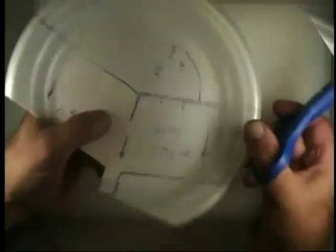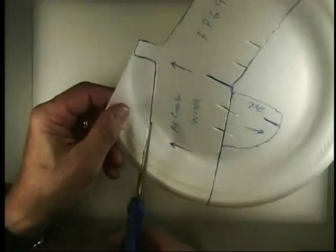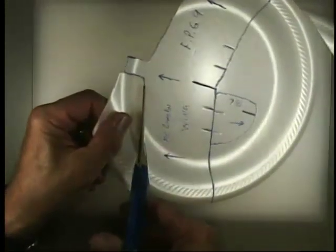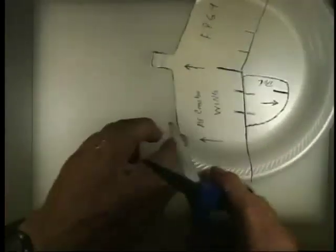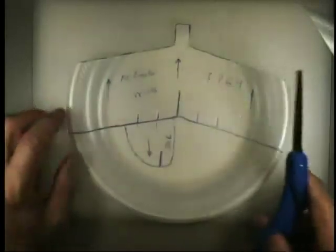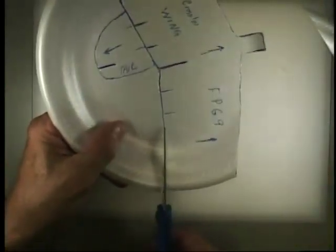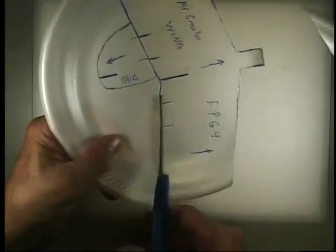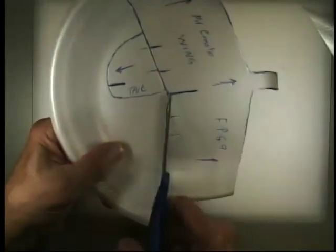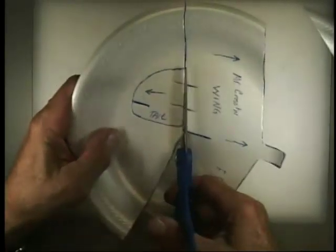Instead of trying to cut that way, I like to rotate the plate and cut. And now I've got the front of my glider. So let's cut off the back of the wing and I cut straight across. And straight across here.